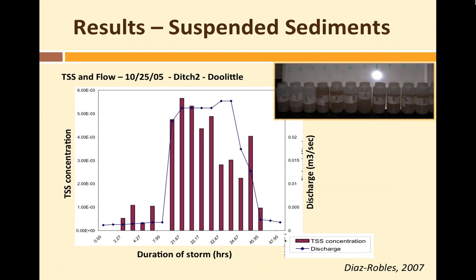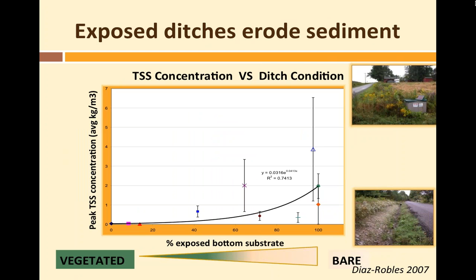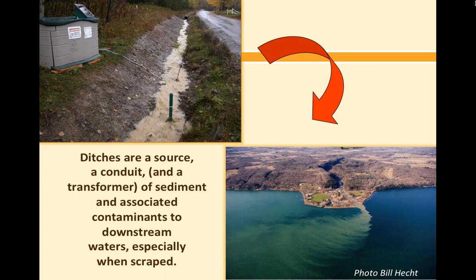We also looked at suspended sediment across storm events using ISCO samplers. Sediment movement depends almost totally on how much vegetation is in the ditch — if there's lots of vegetation, very little sediment moves into the stream. The more exposed substrate there is in the ditch, the higher the sediment loads, up to 50 milligrams per liter — almost a chocolate milkshake. Scraped ditches are a source of sediment and a conduit for sediment depending on adjacent land use. We are also currently looking at how ditches can transform nitrate through denitrification and potentially act as a filter.